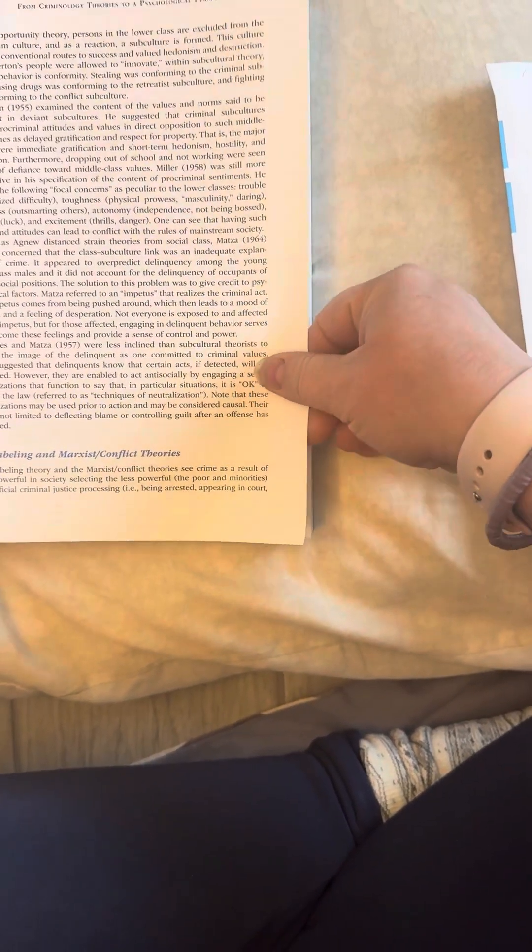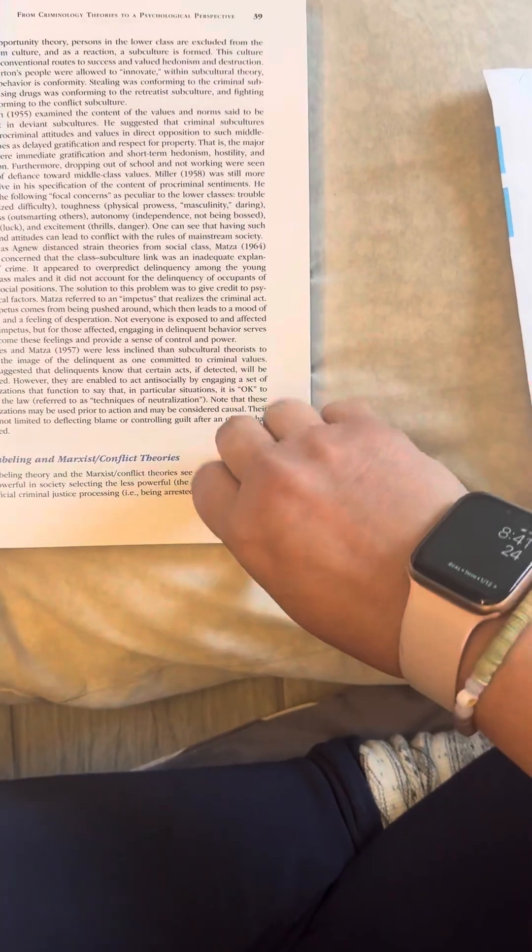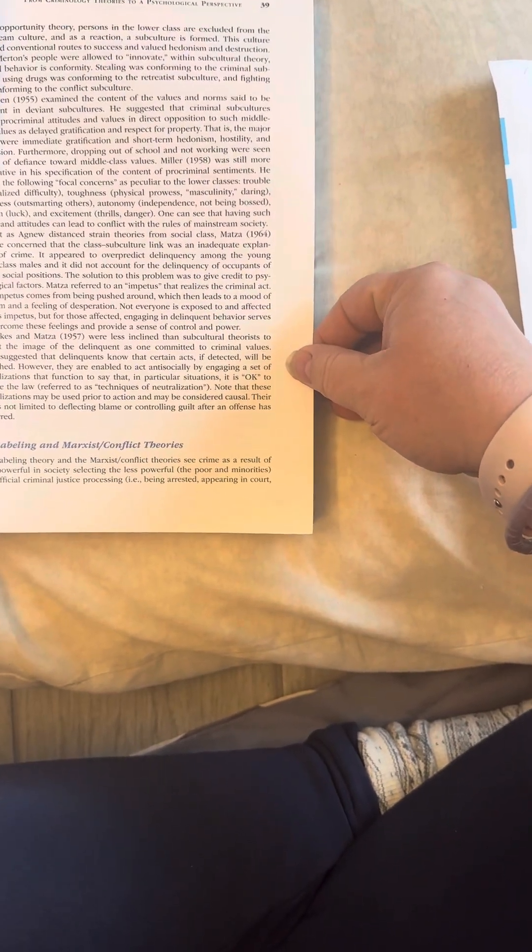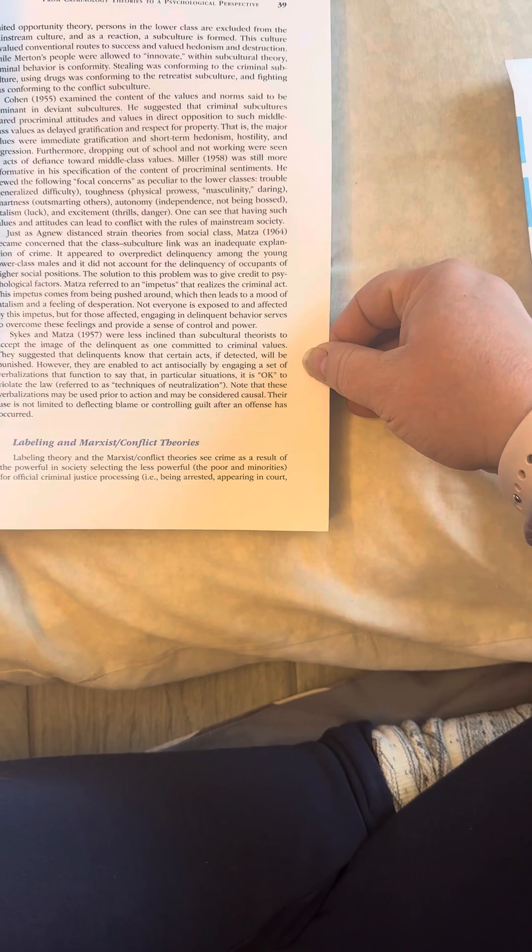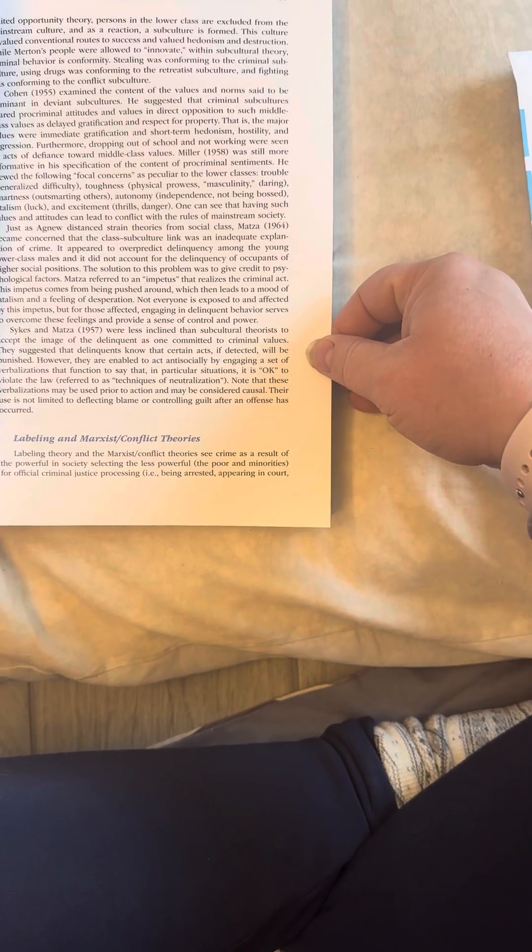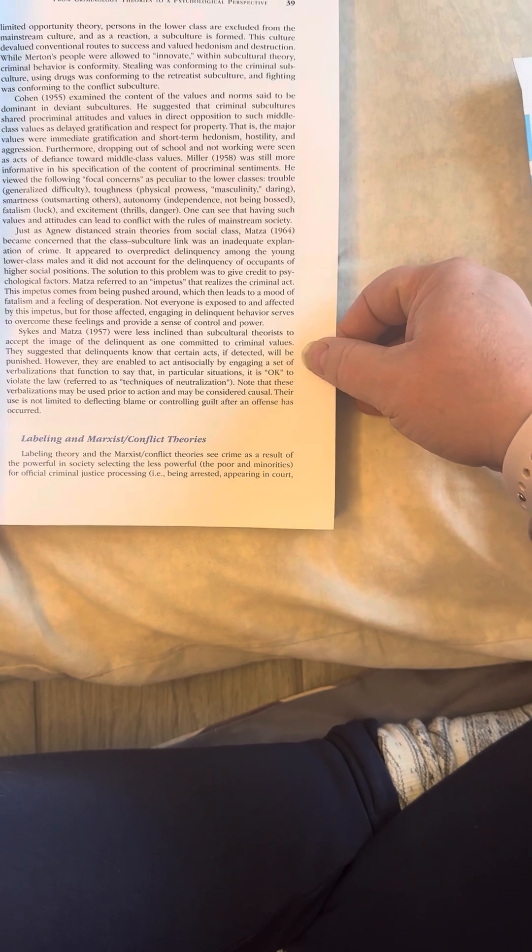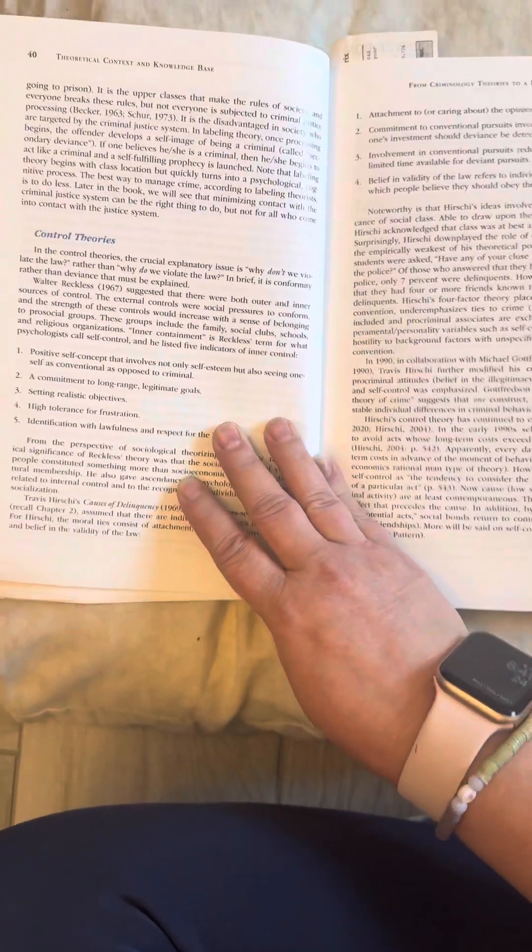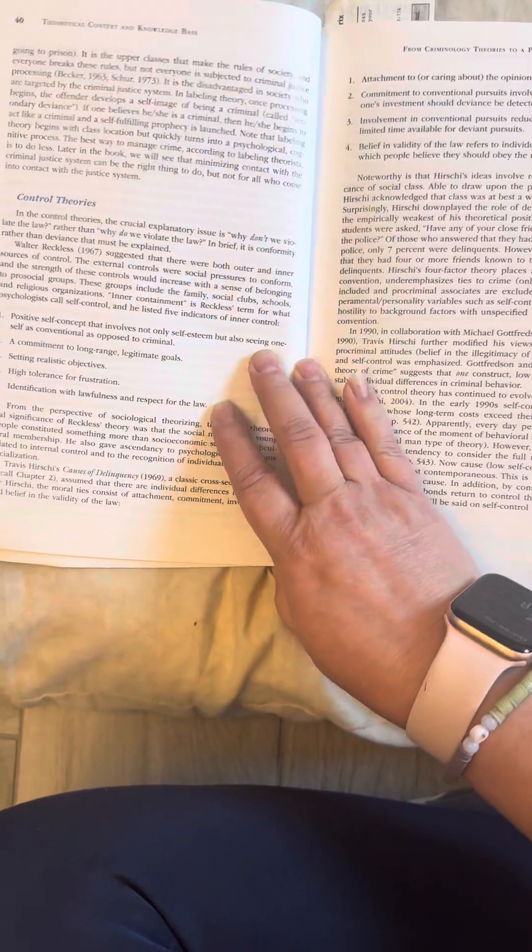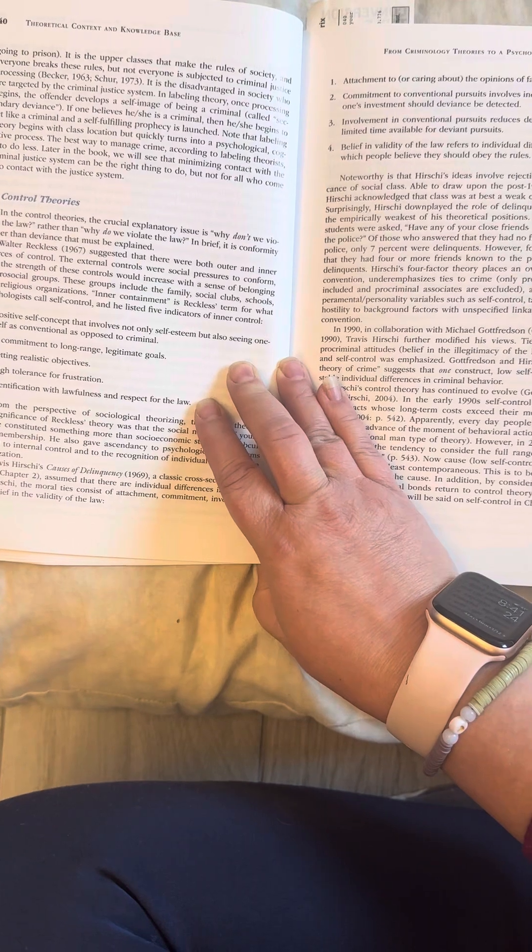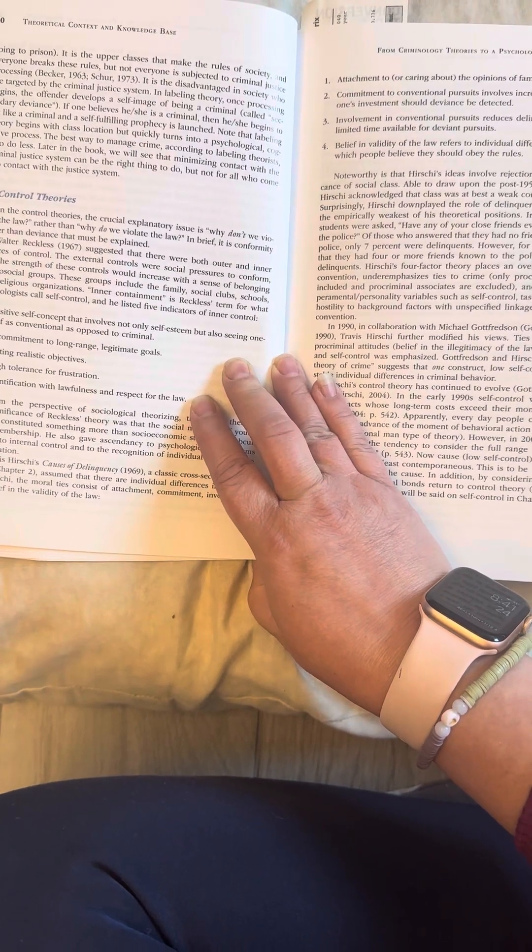Labeling and Marxist Conflict Theories. Labeling theory and the Marxist Conflict Theories see crime as a result of the powerful in society selecting the less powerful, the poor and minorities, for official criminal justice processing, i.e., being arrested, appearing in court, going to prison. It is the upper classes that make the rules of society, and everyone breaks these rules, but not everyone is subjected to criminal justice processing.